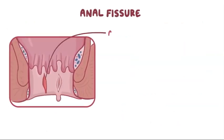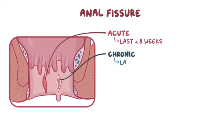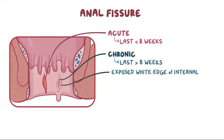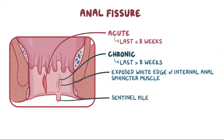Some fissures are acute, lasting less than 8 weeks, whereas others become chronic, lasting for more than 8 weeks. Chronic fissures typically show an exposed white edge of the internal anal sphincter muscle at the base of the fissure. Oftentimes, chronic fissures are accompanied by external skin tags. At the distal end of the fissure, the tag is called the sentinel pile, and at the proximal end, the tag is called the hypertrophied anal papillae.